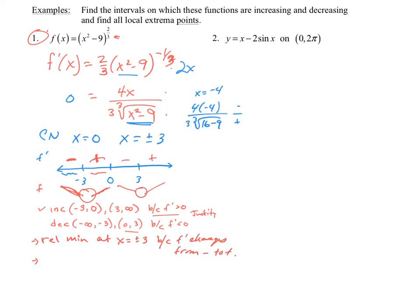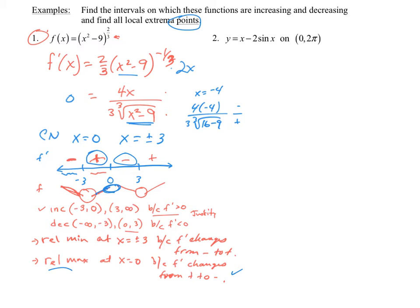The relative maximum is at x equals zero because f prime changes from positive to negative. If the problem asks for points, plug x equals three and x equals zero back into the original function to get the coordinates. If it only asks for x-values, just give the x-values.